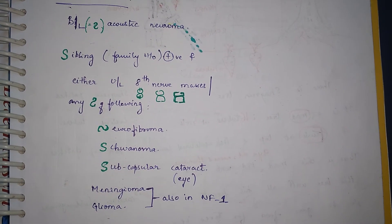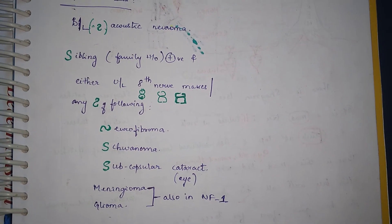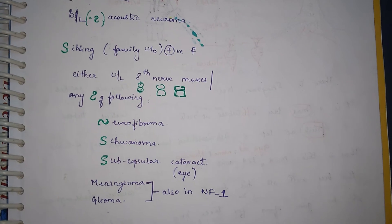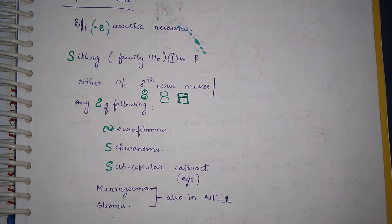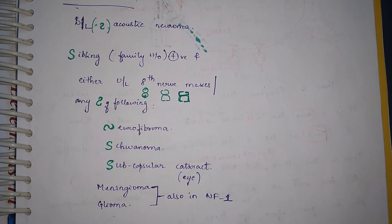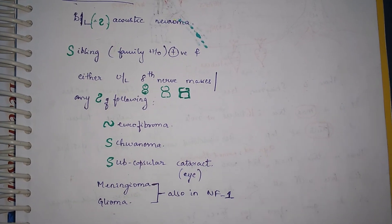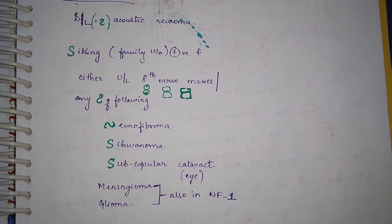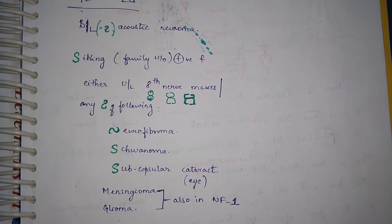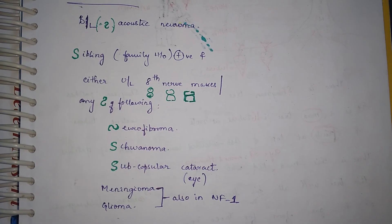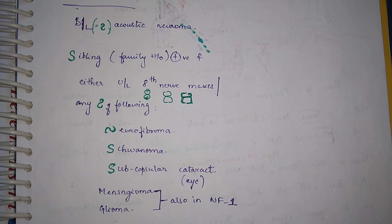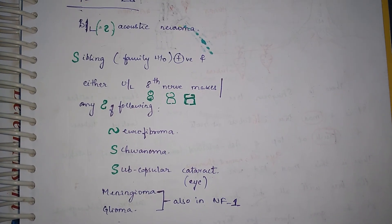Neurofibroma, schwannoma, subcapsular cataract, meningioma, glioma. And here the tip is meningioma and glioma are also common in neurofibromatosis 1. Schwannoma and subcapsular cataract start with S, as you can see. And neurofibroma, anyway, we're talking about neurofibroma, so you can remember that.